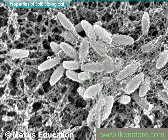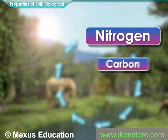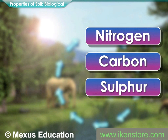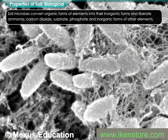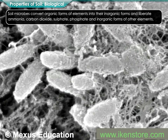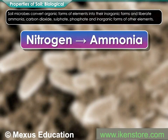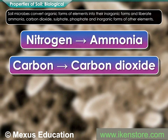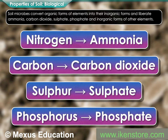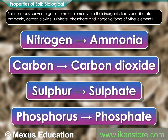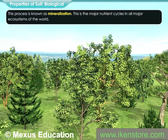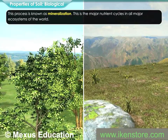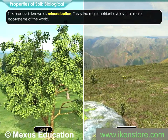Most notable are cycles of nitrogen, carbon, sulfur, and phosphorus, all of which help in increasing soil fertility. Soil microbes convert organic forms of elements into their inorganic forms and liberate ammonia, carbon dioxide, sulfate, phosphate, and inorganic forms of other elements. This process is known as mineralization, and it is the major nutrient cycle in all major ecosystems of the world.